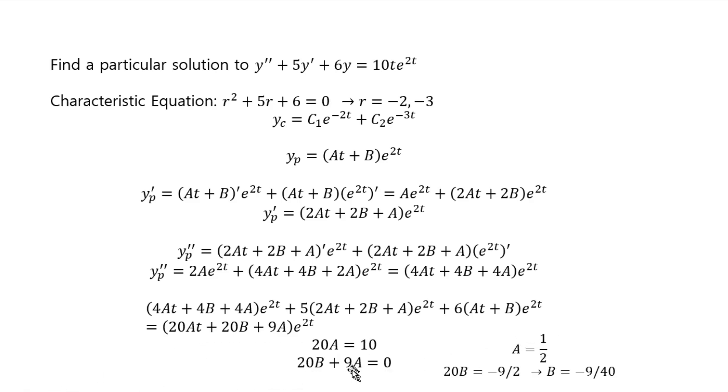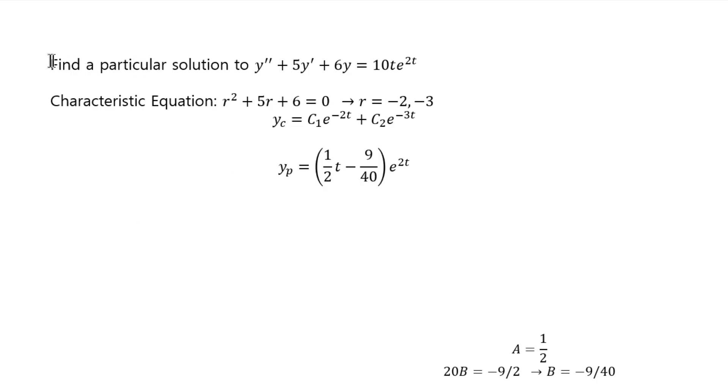And then, 1 half must be plugged into the second one. Move it to the other side. 20b should equal negative 9 over 2. Divide by 20, you get negative 9 over 40. Put these numbers into your particular, and because the question is just asking for particular, you just stop here. If it was asking for the general solution, then you would write down this plus this as the general solution, right?